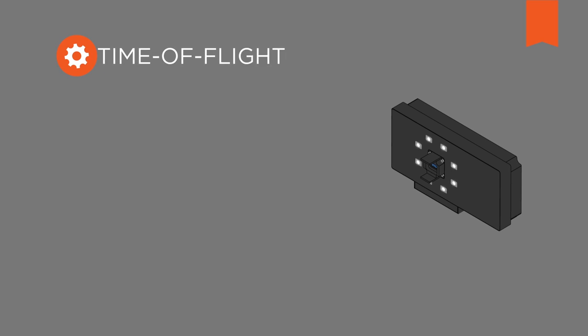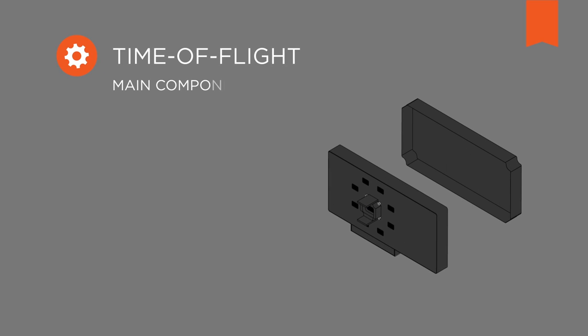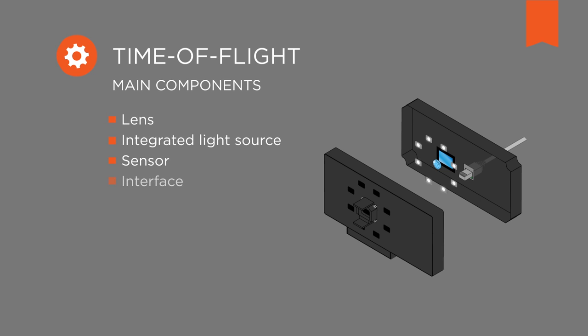A time of flight camera consists of the following main components: a lens, an integrated light source, a sensor that stores all captured image information, and an interface.